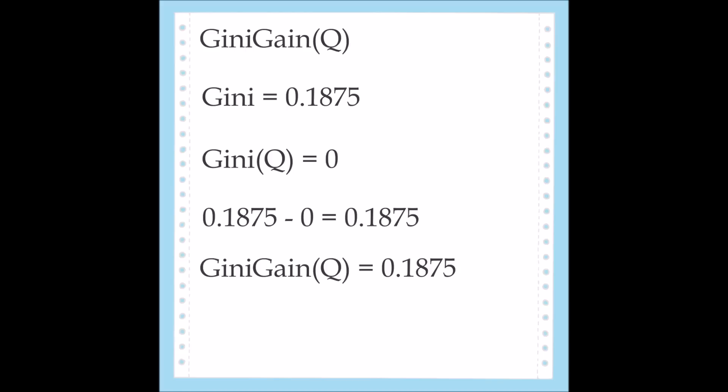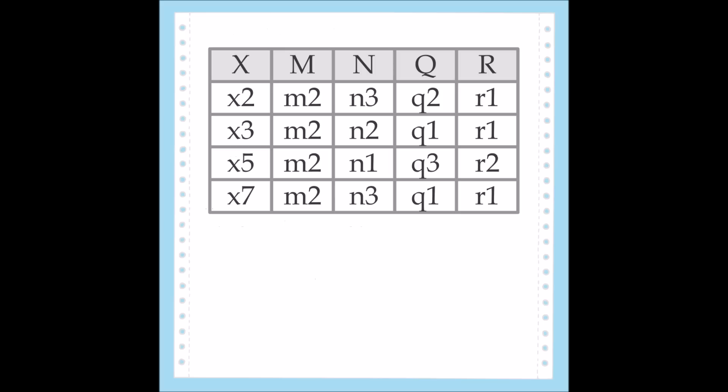Because the gains of N and Q are equal, they would work equally well as the splitting attribute. For this example, I'm going to create the trees and rules for both N and Q. Let's start with splitting on N.